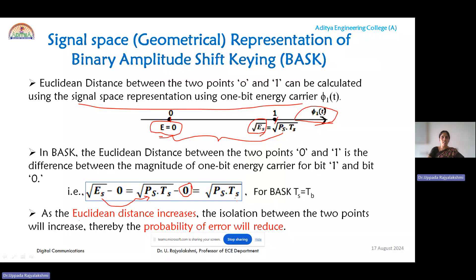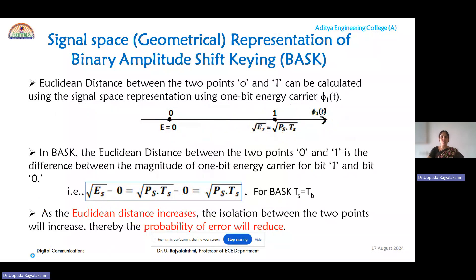Remember that TS equals bit duration — symbol duration and bit duration are the same for binary keying. Another key point: as the Euclidean distance increases, the isolation between the two points increases, which reduces the probability of error. However, in the case of ASK, the Euclidean distance between the two points is very small, so the probability of error in ASK is very high.